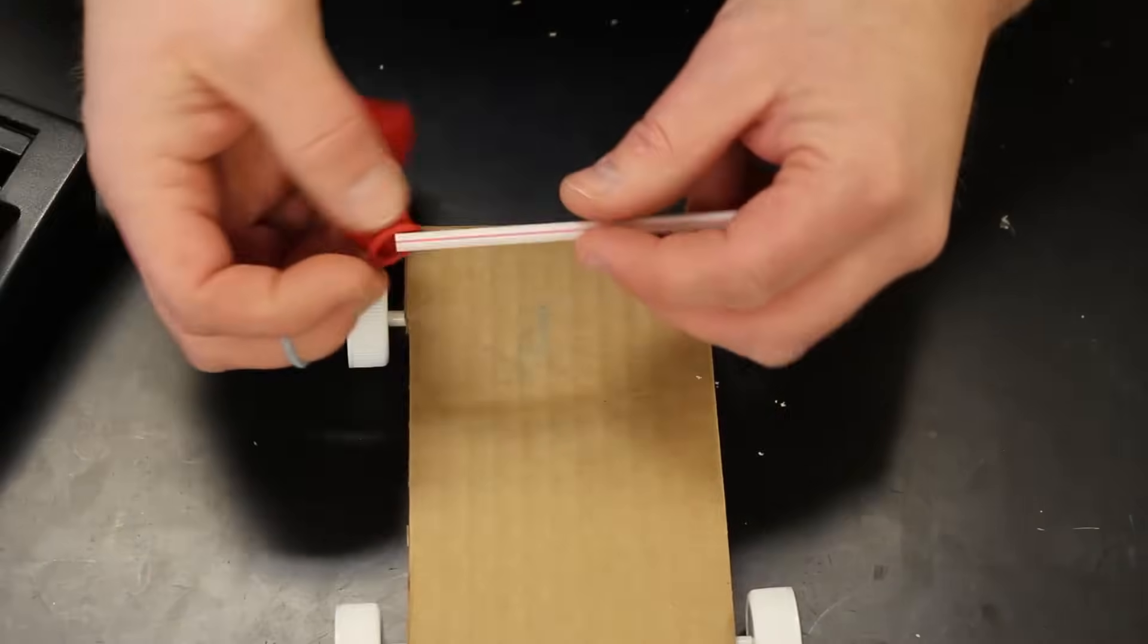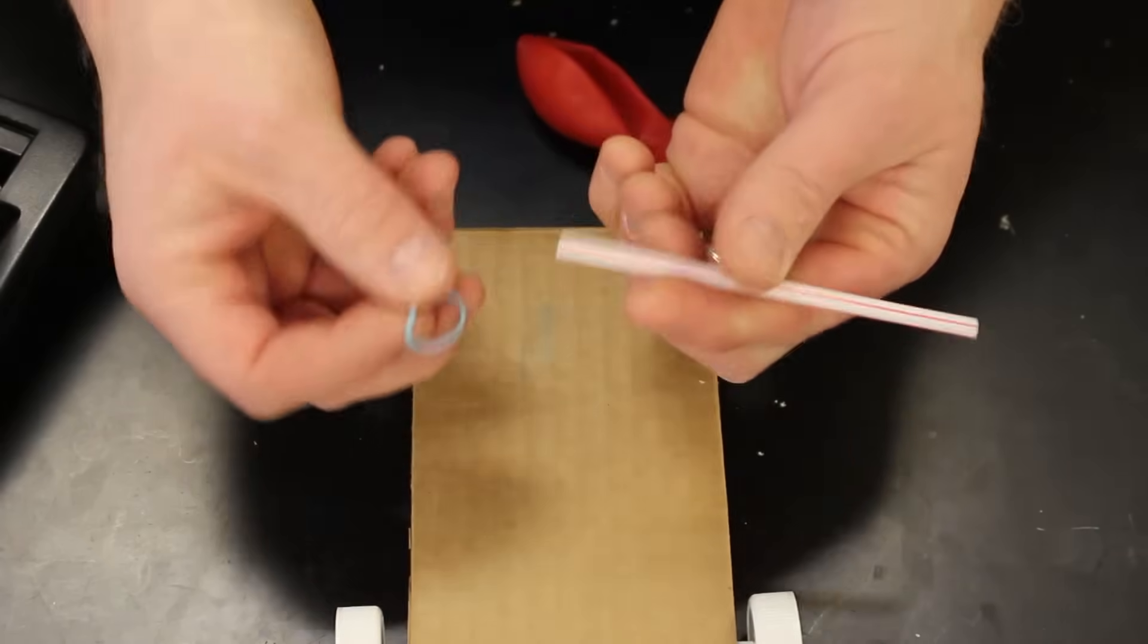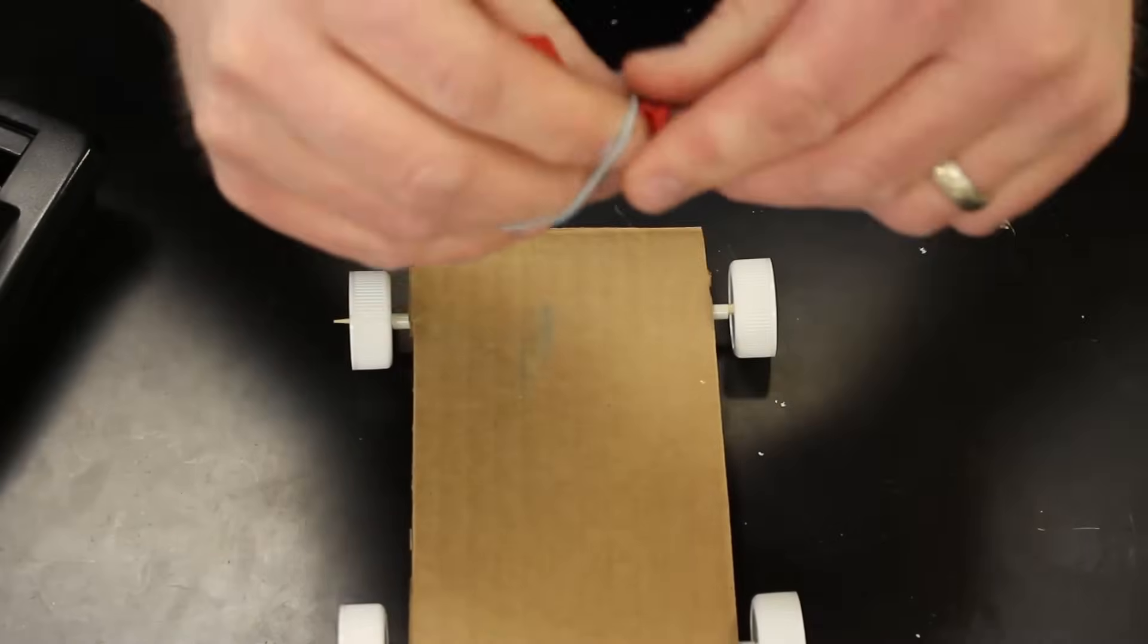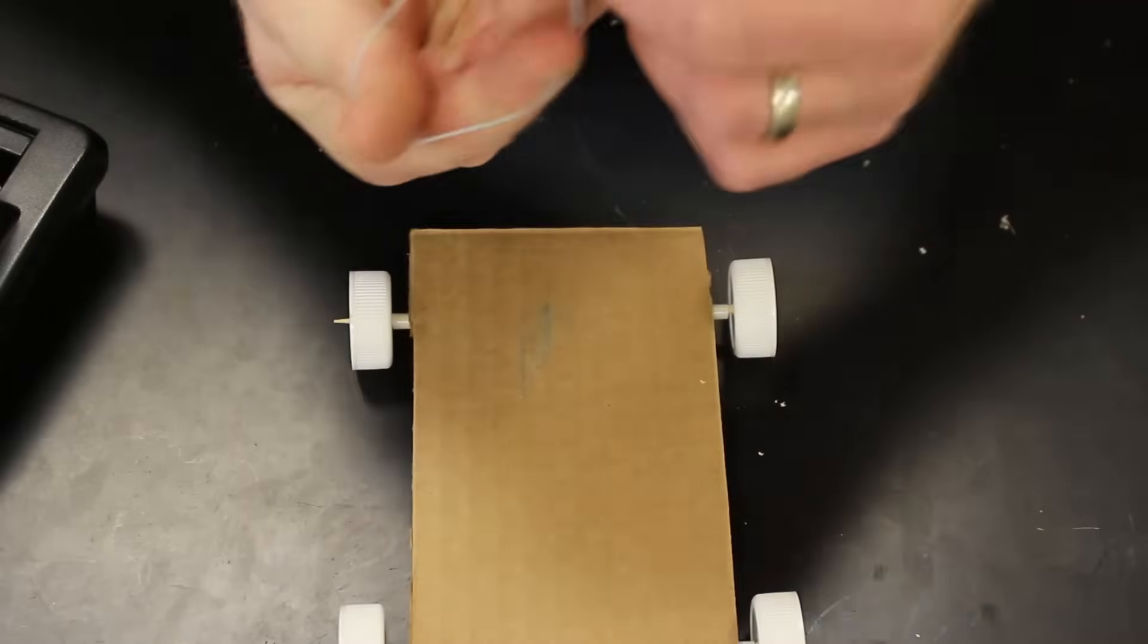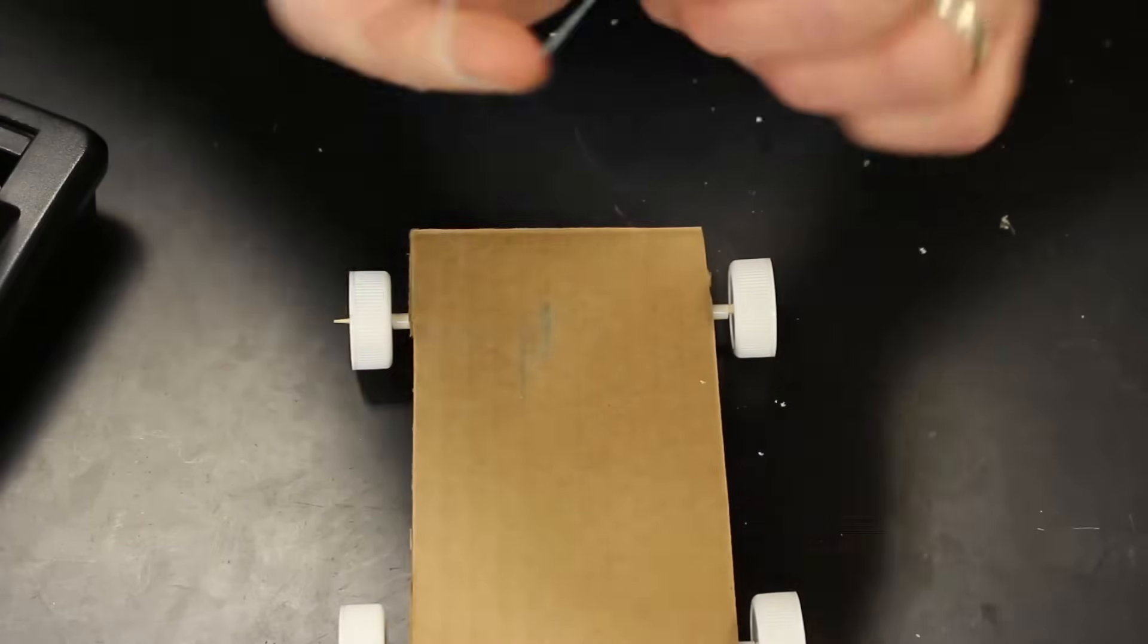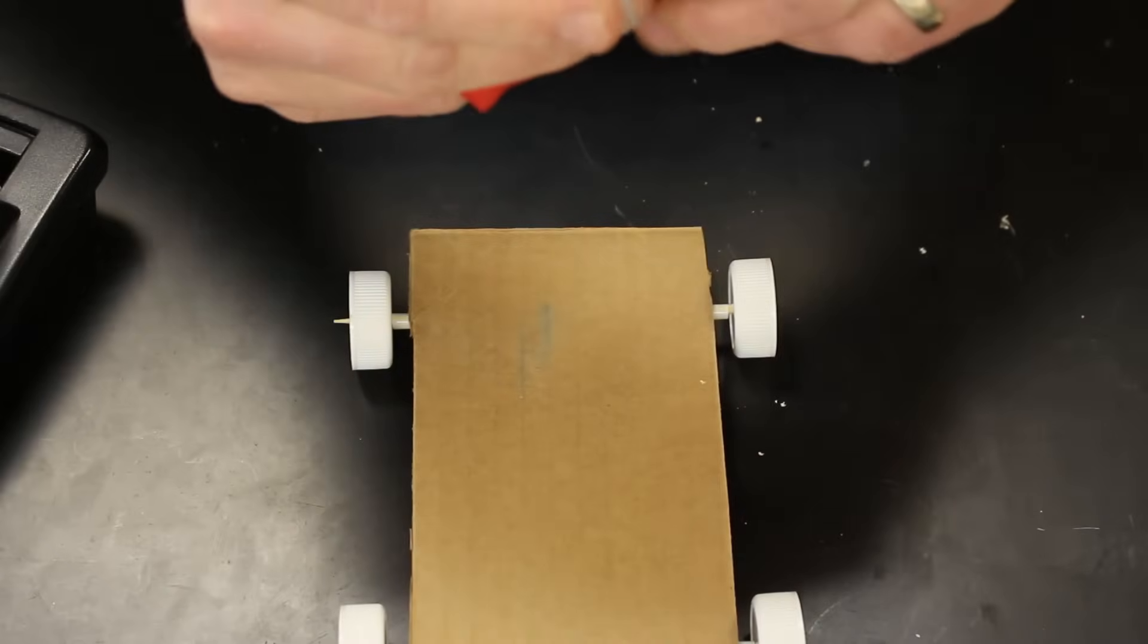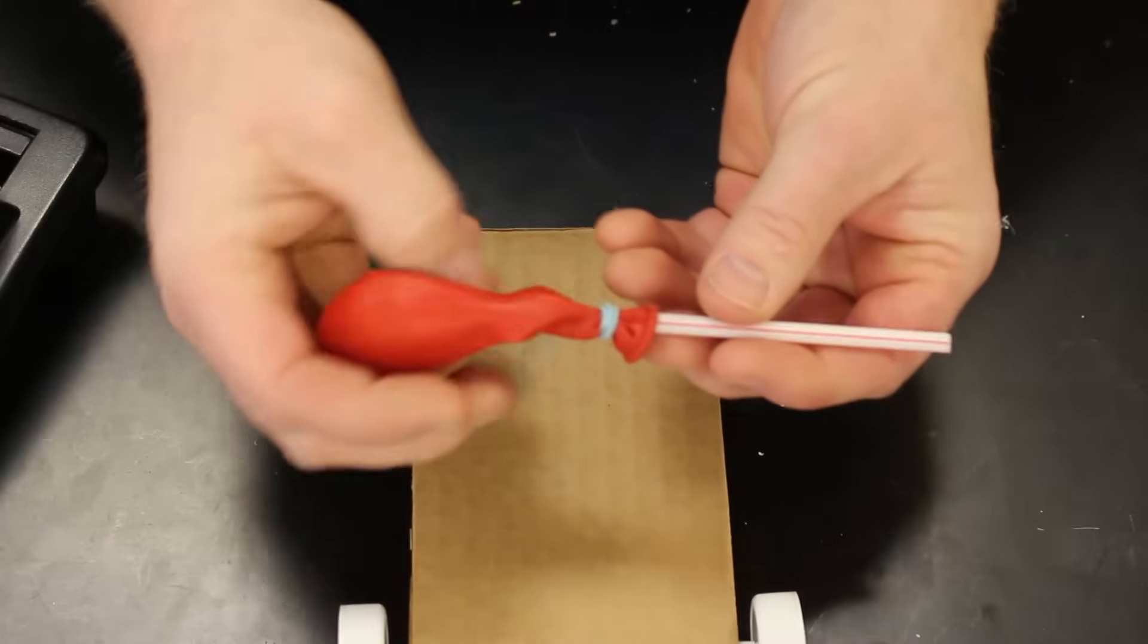Now it's time to attach the straw to the balloon. The best way I found to do this is to use one of these little blue rubber bands for bracelets and wrap it around. I have about an inch of the straw inside of the balloon. I'm going to twist this several times until it's tight, about four or five times if you can. That should be enough to make an airtight seal on the balloon.